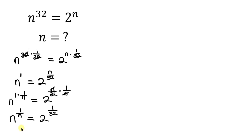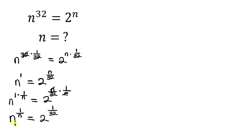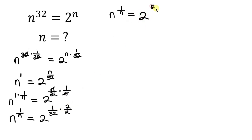Our next step will be to apply some manipulation on the right-hand side. We want to make the right-hand side resemble the left-hand side. I'll do that by multiplying the numerator by 2 and also dividing the numerator of the exponent by 2. We're doing it this way — there is no need to do the same thing on the left-hand side, because when 2 divides 2 we get 1, and 1 times 1 over 32 is 1 over 32. So this simplifies into n to the 1 over n equal to 2 to the 1, and 1 times 2 is 2, over 32 times 2 is 64.